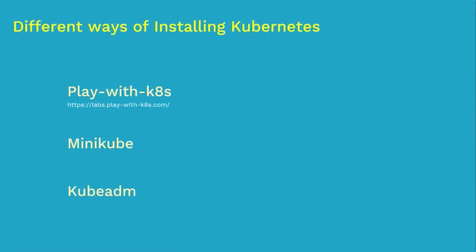Next, moving on to Kubeadm. Kubeadm is the way to go if you want an actual real-time setup. Using the Kubeadm tool, you can set up a multi-node Kubernetes cluster, and this is one of the most popular installation methods for Kubernetes. Depending upon the system resources you have, you can create multiple VMs and configure Kubernetes master and node components. In case you have limited system resources but want to use the Kubeadm method, you can spin up cloud-based VMs — this is exactly what we are going to do in this course.